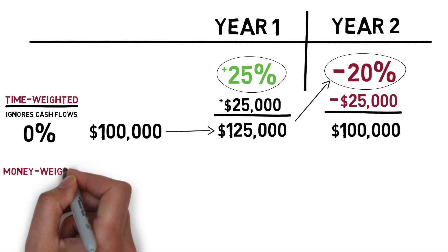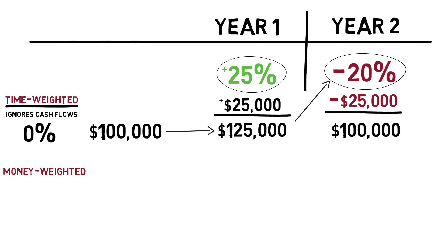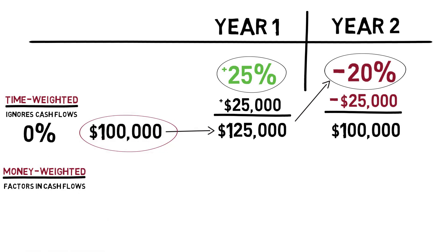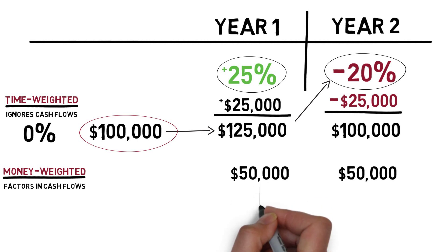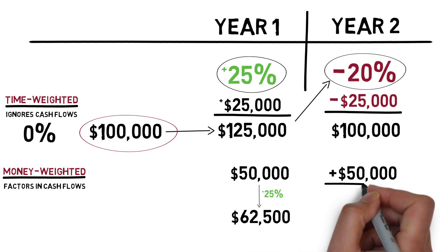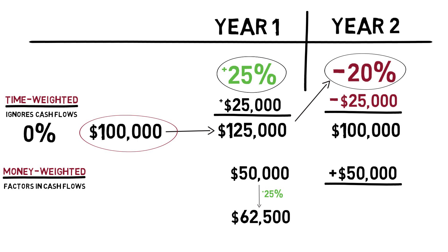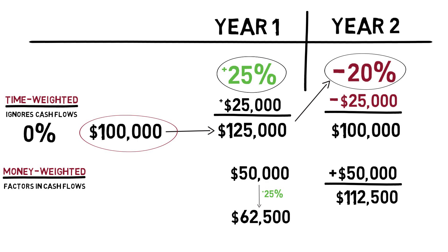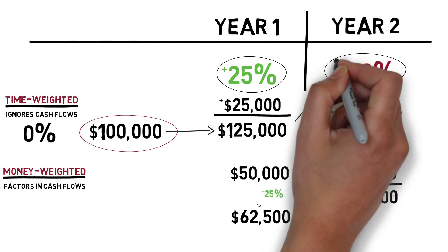Now let's take a look at the money-weighted rate of return calculation. Remember, this calculation is affected by when you add or take money away. So using the exact same investment, let's see what the rate of return would be using a money-weighted methodology. Instead of putting in $100,000 to start, we put $50,000 into the fund at the beginning of each year. In year one, our initial $50,000 earns 25% and grows to $62,500. Now, we put in another $50,000. Adding that to $62,500 gives us $112,500 invested at the beginning of year two. But we know that year two sees a loss of 20%.